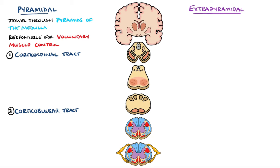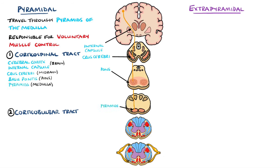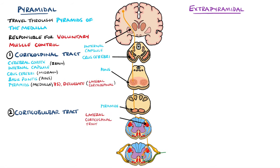The corticospinal tracts are responsible for the control of the body. The cell bodies are found within the cerebral cortex, with axons converging and passing through the internal capsule, followed by the crus cerebri in the midbrain, the pons, and subsequently arriving into the medulla oblongata. At this level, around 75% of the fibres will decussate to the other side of the spinal cord and continue down to synapse with the lower motor neuron in the ventral horns at each level. These fibres are known as the lateral corticospinal tract.